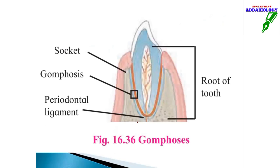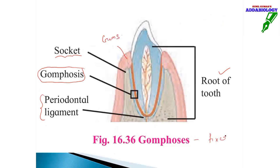So gomphosis is a fixed joint — the tooth never moves. There is a socket and the root of the tooth fits in it, held in position by the periodontal ligament, with gums surrounding it. In summary, under fixed joints: first we saw skull sutures, then syndesmosis (tibia-fibula, radius-ulna), and then gomphosis (tooth in socket).